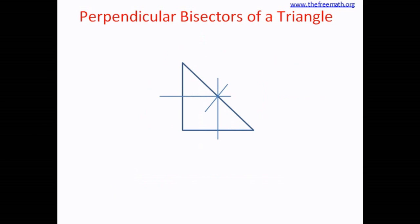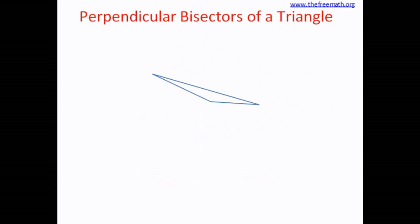And the circumcircle will look like this. How about an obtuse triangle? Where will the circumcenter be? The circumcenter is where all the perpendicular bisectors of the sides meet. Will the perpendicular bisectors meet inside the triangle, on the triangle, or outside of it?